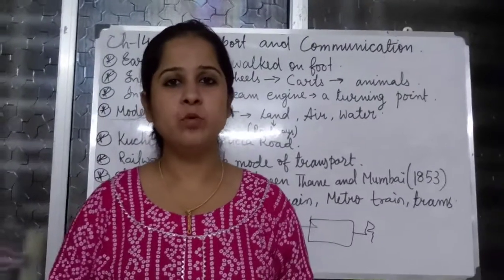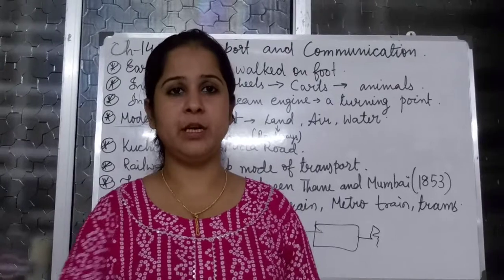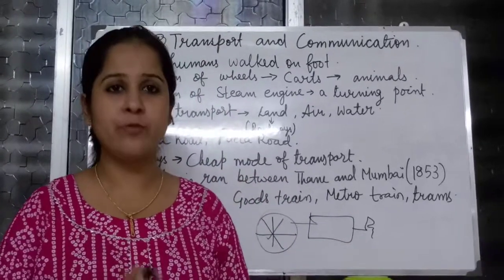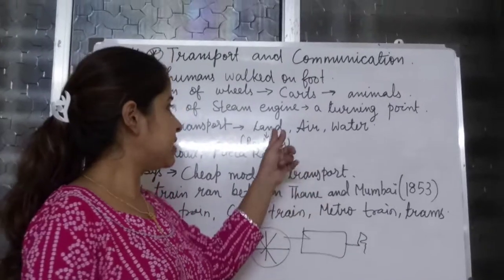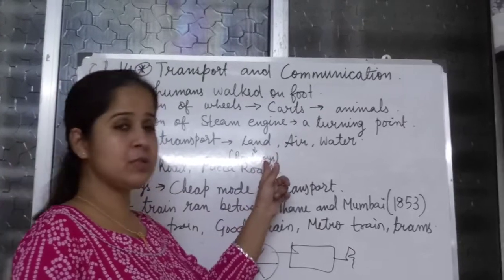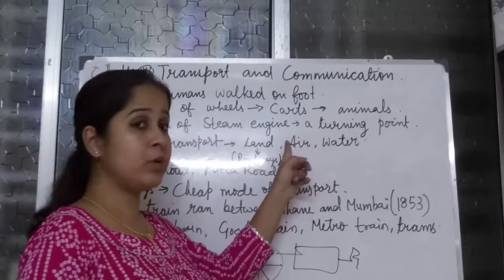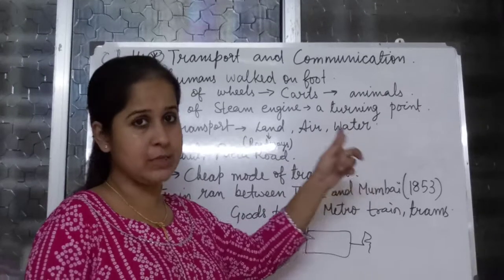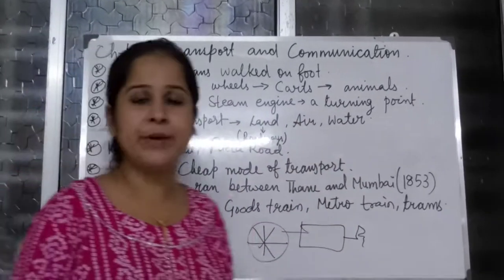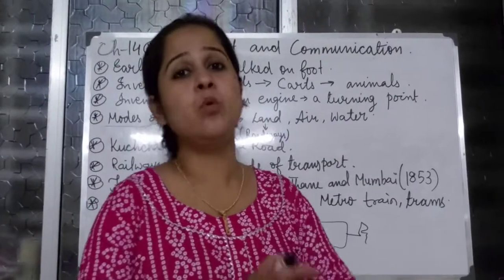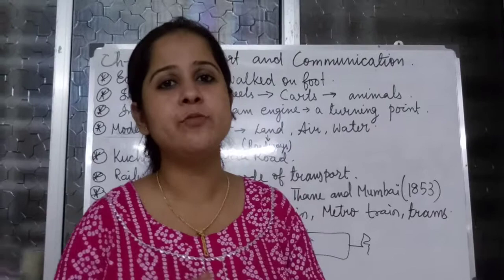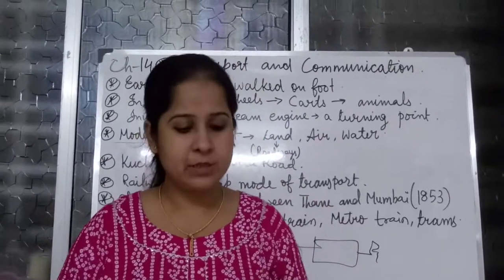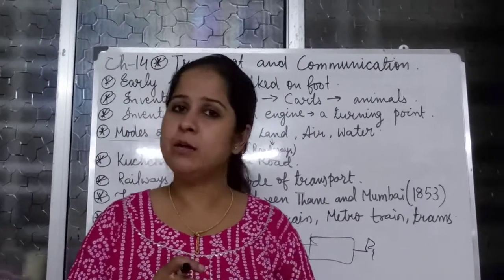There are three different means of transport: land transport called roadways, air transport called airways, and water transport called waterways. When we talk about roadways, we must know how many types of roads we have. Roads are mainly of two types: Kaccha road and Pakka road. In class 3, you have read about Kaccha road and Pakka road.